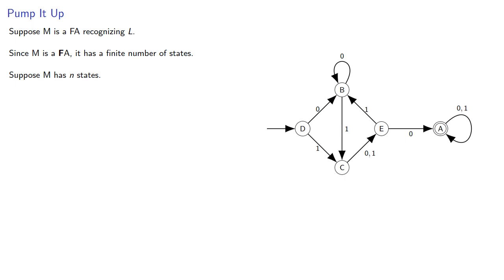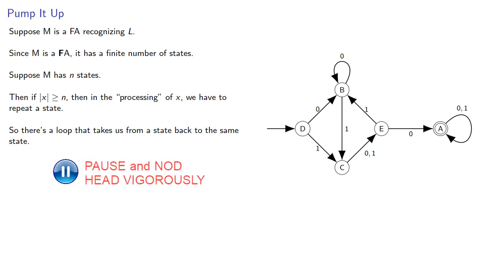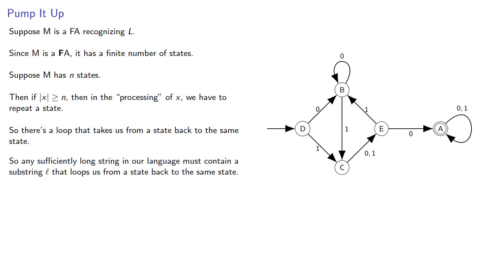If the length of our string is at least as great as n, then in the processing of our string we have to repeat a state, and so there has to be a loop that takes us from a state back to the same state. So any sufficiently long string in our language must contain a substring that loops us from a state back to the same state, and we can repeat this loop as many times as we want to get another string in our language.